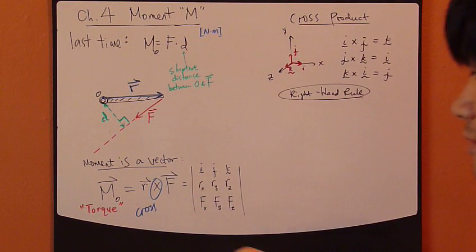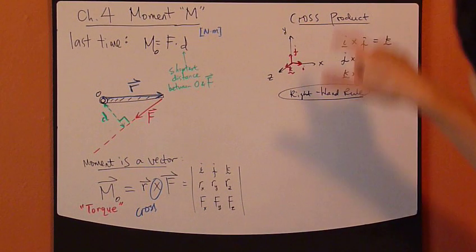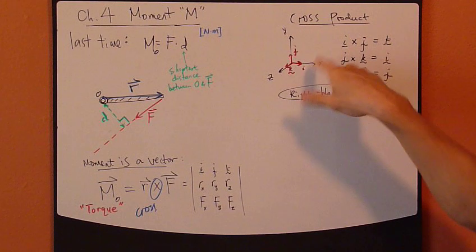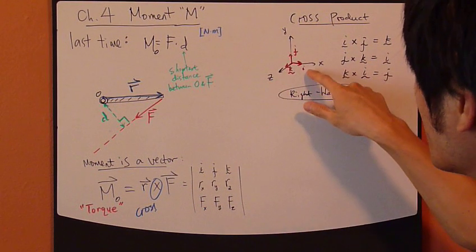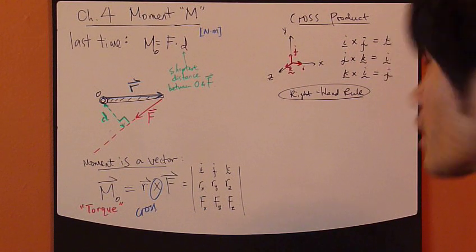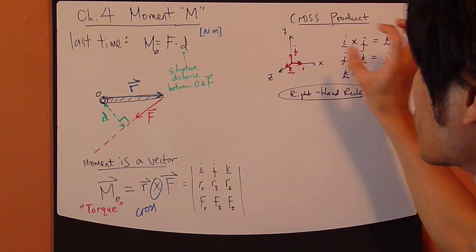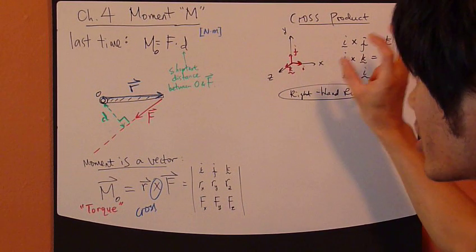Okay, let's look at cross product a little more. Cross product, let's get this Cartesian coordinate system, X, Y, and Z this way. So I have unit vector I, J, and K. You can take cross product of the unit vectors themselves.